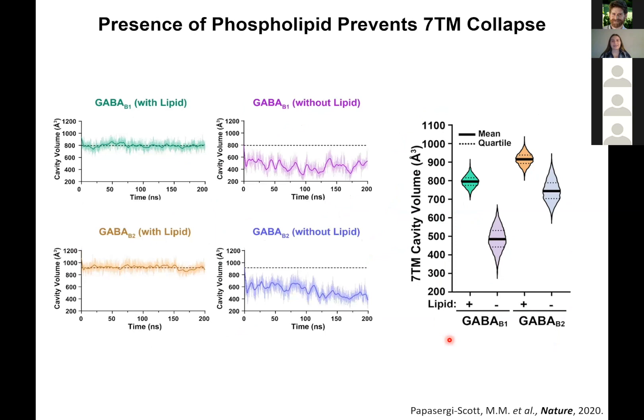The phospholipid is also important for the structural integrity of the receptor, as we found through molecular dynamics simulations. When we run simulations and remove the lipid from the receptor, we actually see a very quick collapse of the receptor's transmembrane domains. If we measure the transmembrane cavity volume, we see about a 30% decrease in cavity volume when we remove that lipid over time.